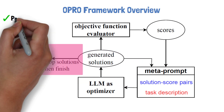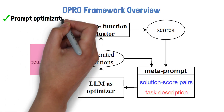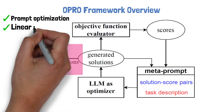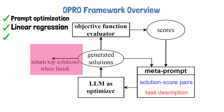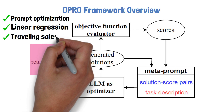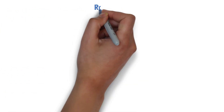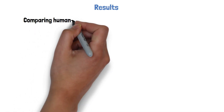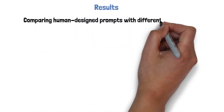We saw how to apply this framework to prompt optimization. In addition, in the paper the researchers show how they use OPRO to solve linear regression and traveling salesman's optimization problems, which we won't dive into in this video. Let's now move on to review some of the results presented in the paper, starting with a comparison of human-designed prompts with different LLM optimizers.